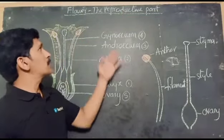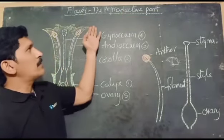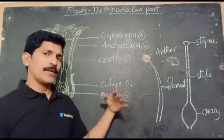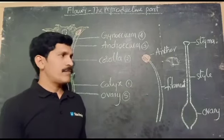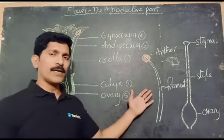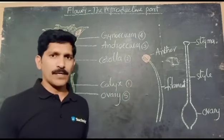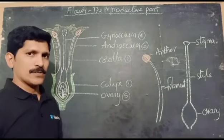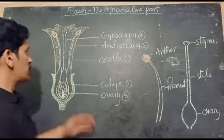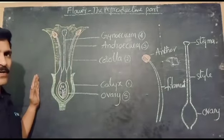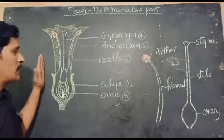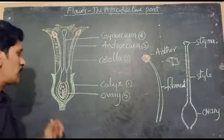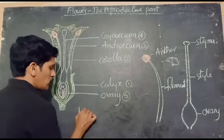Today we are going to discuss the flower reproductive part. Generally in the plant so many parts are there, but the flower is the most important — it is the only reproductive part of the plant which can produce a new generation. Here, when we observe the LS of a flower, we are usually observing the longitudinal section of the flower of Datura.